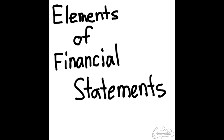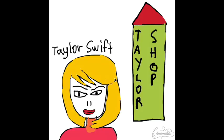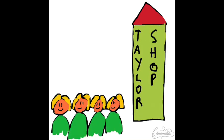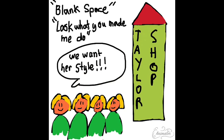Let's say Taylor Swift has a business named Tailor Shop and she sells all the clothes that she wore in every song that she makes, because a lot of girls are admiring her style — she looks really stunning, especially in her videos Blank Space and Look What You Made Me Do.